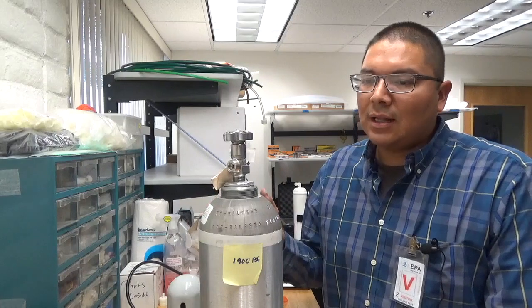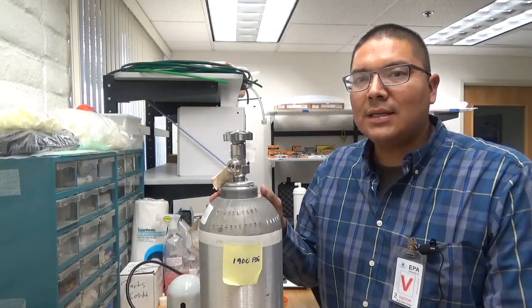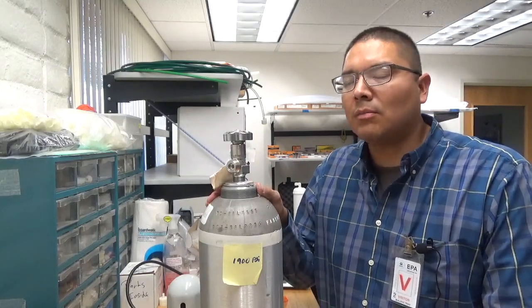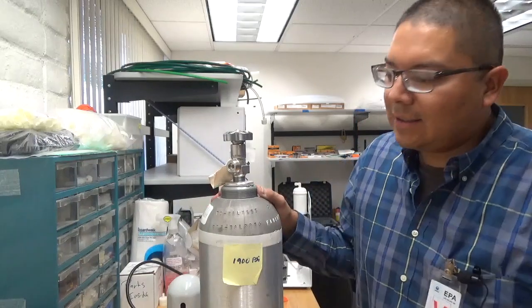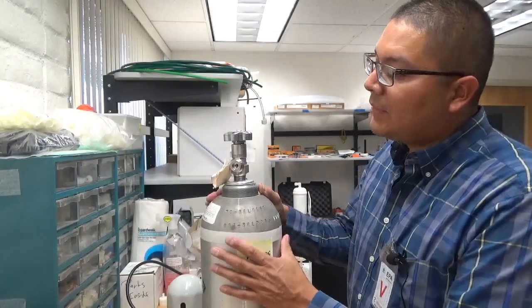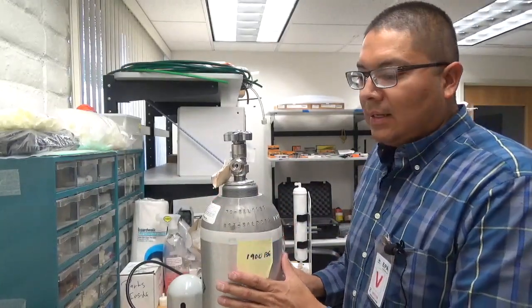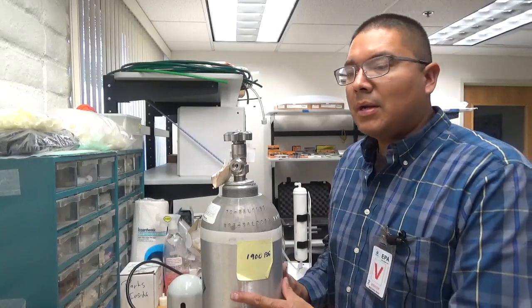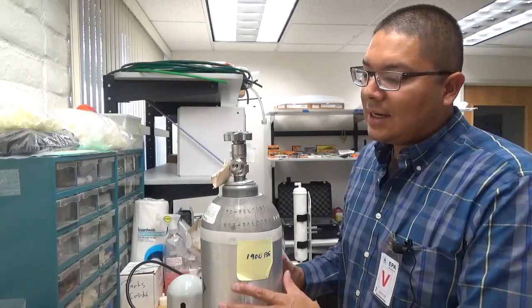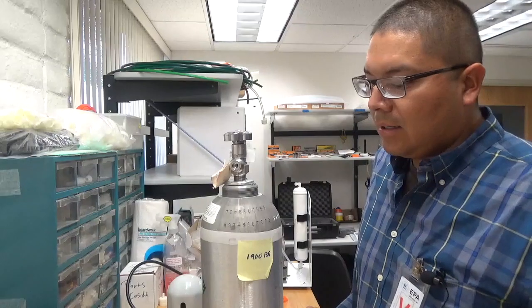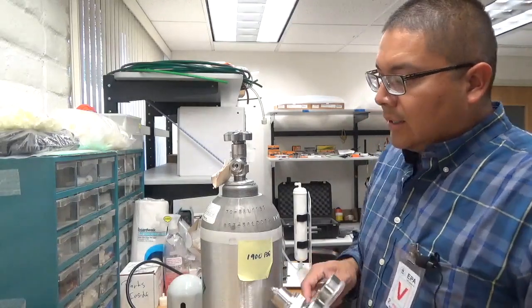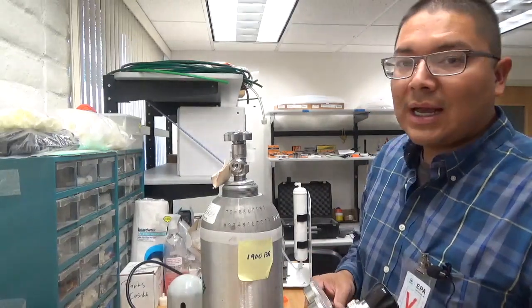Typically you have a calibration gas cylinder that is a single blend, dual blend, or multi-gas blend. This gas cylinder in particular is a multi-blend gas cylinder. It's got carbon monoxide, nitric oxide, and sulfur dioxide blended in to the cylinder at a known gas concentration.